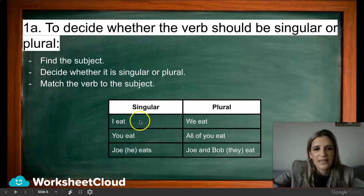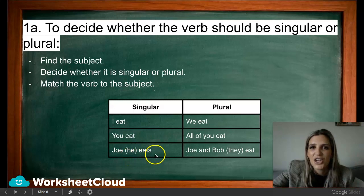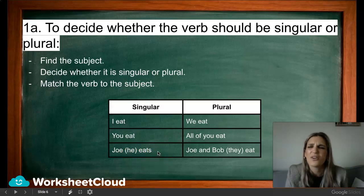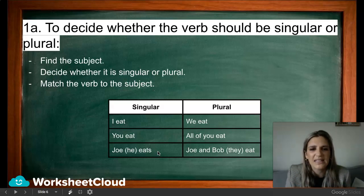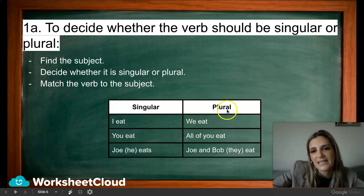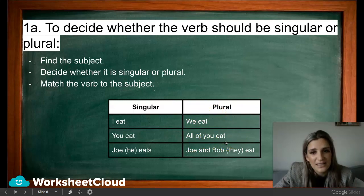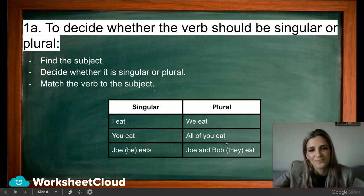Here are some examples of singular and plural verbs. I eat — one person. You eat — one person. Joe eats — singular. Many of my learners ask why 'eats' has an S if it's singular. Look at 'we eat' — that's plural because there are many people eating. All of you eat, they eat — many people eating. So the S on the singular verb does not mean plural.